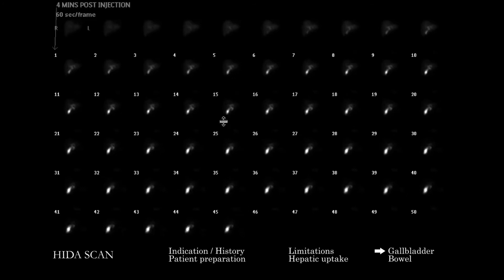It's important to know that you have to be able to see bowel activity before giving any morphine. If there's delayed gallbladder uptake — so not in this case where we're seeing it early — but if you go past an hour and then actually see the gallbladder after an hour, that could correlate with chronic cholecystitis. You want to be looking at prior studies and even consider a gallbladder ejection fraction study.